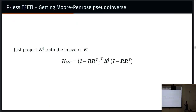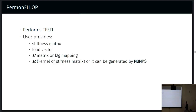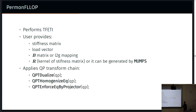That's about it, and PERMON Flop does exactly this. If you provide it with a stiffness matrix and load vector, you can specify the B matrix or just the local-to-global mapping. If your stiffness matrix is in MATIS format, you don't even have to specify the L2G mapping. You can specify the kernel of the stiffness matrices, or we can compute it using MUMPS. What Flop does is it applies the proper chain of transformations — basically just dualization and homogenization of equality constraints — essentially the things I was describing in the derivation of FETI.